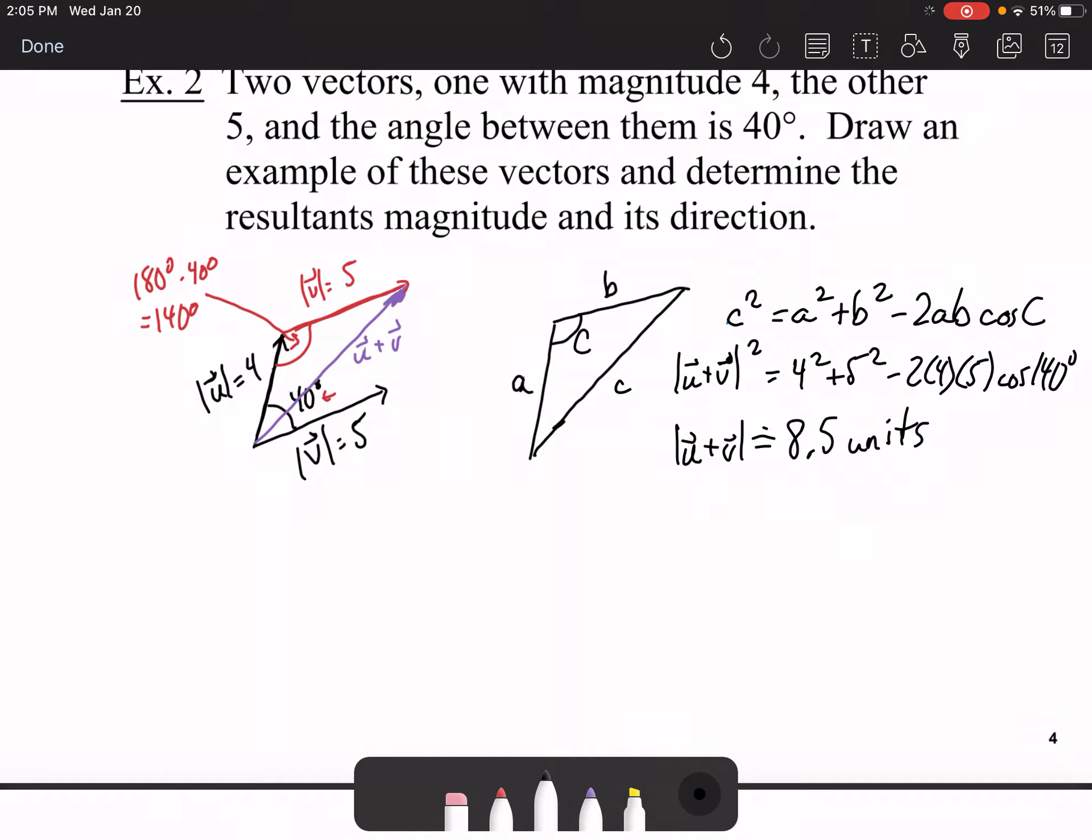What we want to now do now that we have its magnitude, we need the direction. To figure out the direction you're always figuring out the direction based on the angle in the bottom corner here. That's where the tail is. I'm going to call this angle theta here and I'm going to use sine law to help me out. I'm going to set up my sine law here.